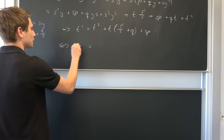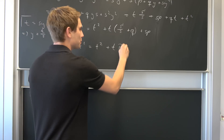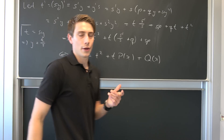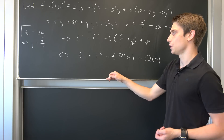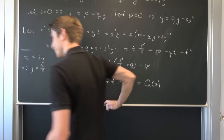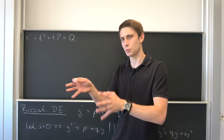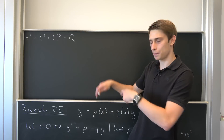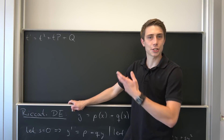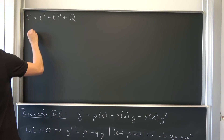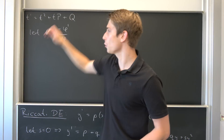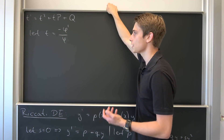Overall we end up with t prime equal to t squared plus t times capital P of x plus capital Q of x — where those are just functions of x. We've ended up with another quadratic in t, so we need to introduce another substitution to get rid of this problem. Some smart people — probably including this Italian fellow — thought about how to solve something like this. So let t be equal to negative phi prime over phi.